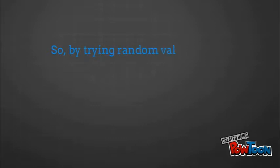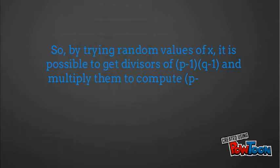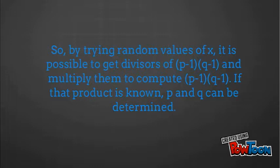So, by trying random values of x, it is possible to get divisors of p minus 1 times q minus 1 and multiply them to compute p minus 1 times q minus 1. If that product is known, p and q can be determined.